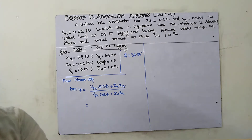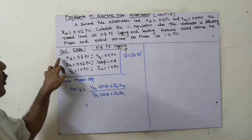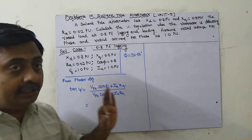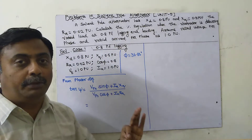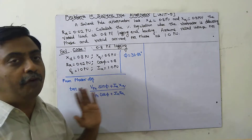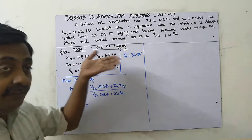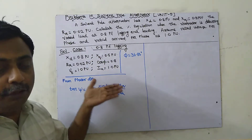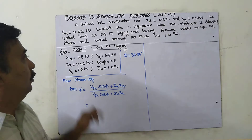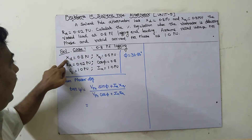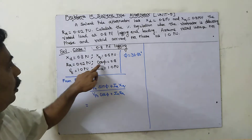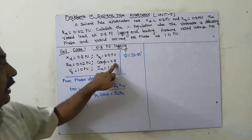Case one: 0.8 power factor lagging. Before solving, you should know the phasor diagram clearly — only then will you remember the formulas. All formulas are derived from the phasor diagram for the salient pole alternator. Given: xd = 0.8, xq = 0.5, ra = 0.02, cos φ = 0.8.